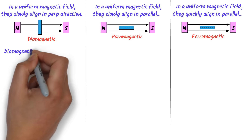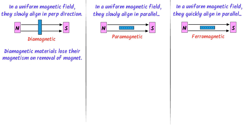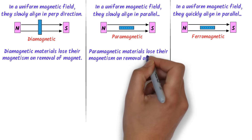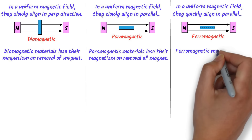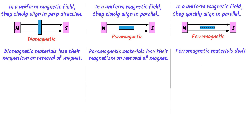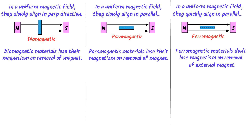Fourthly, diamagnetic materials lose their magnetism on removal of the external magnetic field, while paramagnetic materials also lose their magnetism on removal of the external magnetic field. While ferromagnetic materials do not lose their magnetism on removal of the external magnetic field — remember that they are permanent magnets.